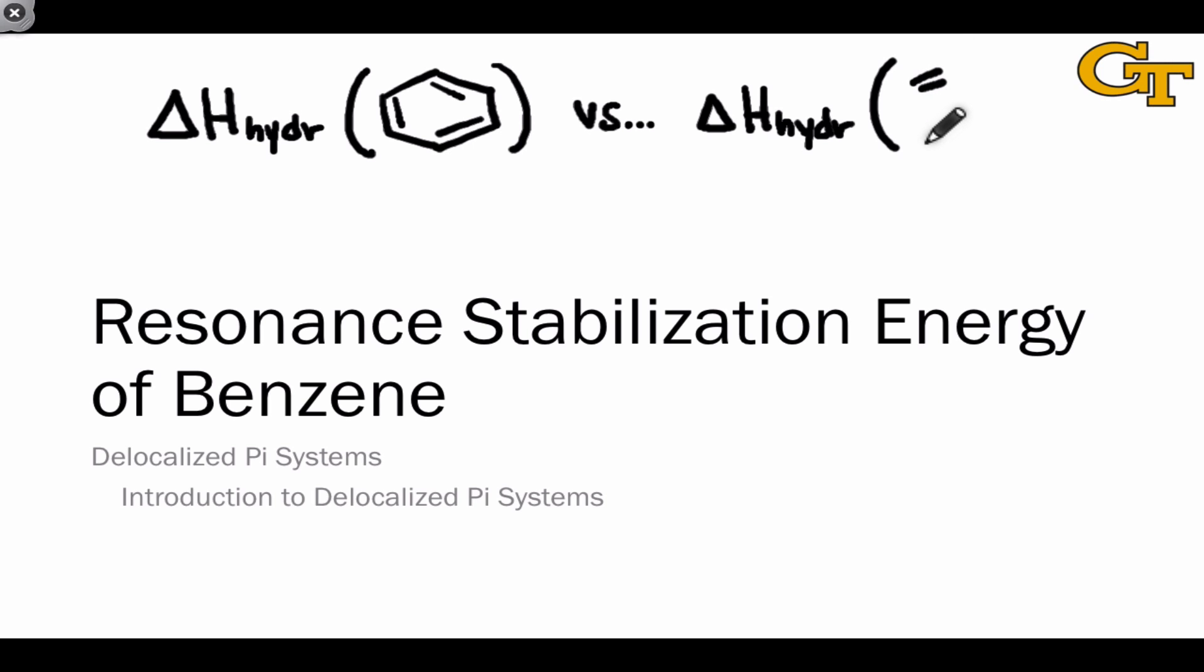A molecule in which we still have a six-membered ring so that we still end up with cyclohexane as the hydrogenation product, but in which the double bonds and single bonds are now distinct and resonance has essentially been turned off.